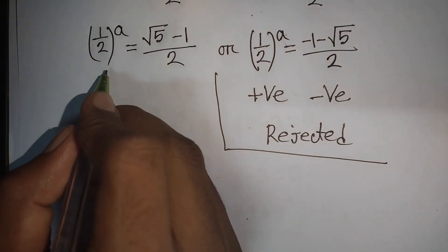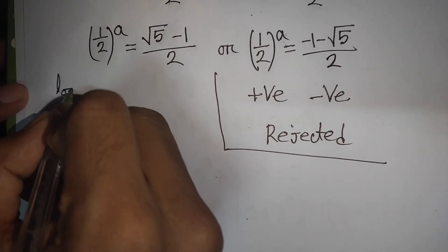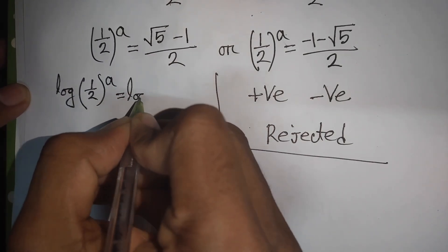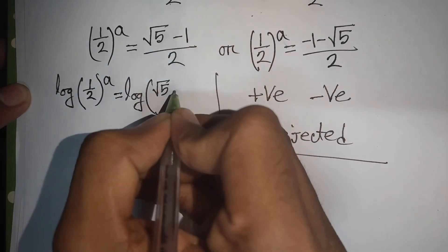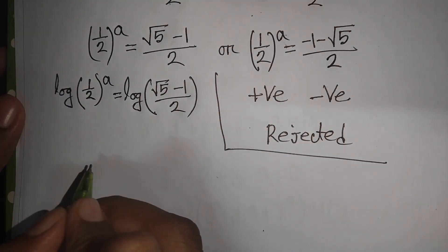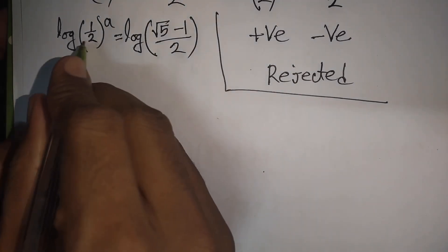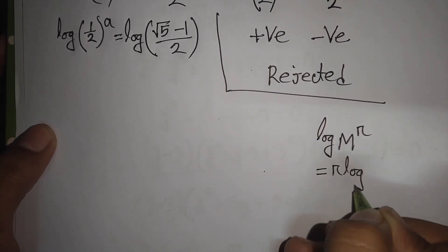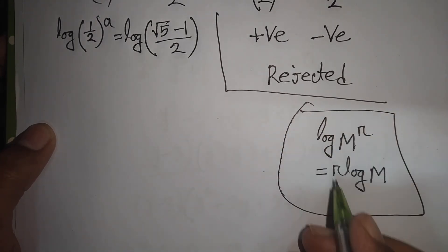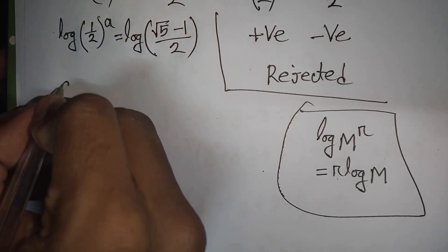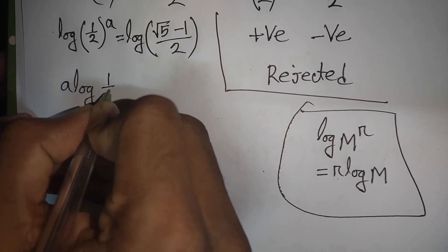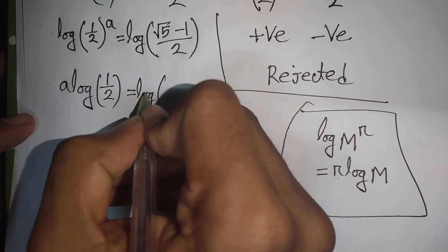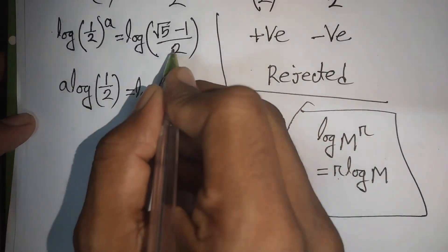We apply log to both sides: log of (1/2)^a equals log of (square root of 5 minus 1) divided by 2. Using the rule log(m^r) equals r times log(m), the power a moves to the front: a times log(1/2) equals log of (square root of 5 minus 1) divided by 2.